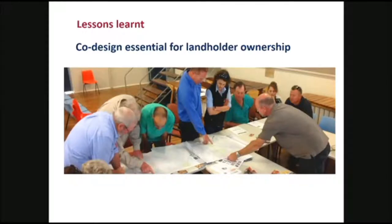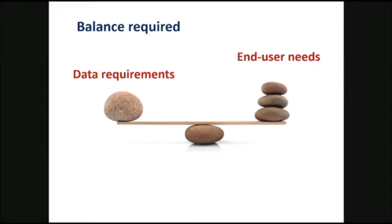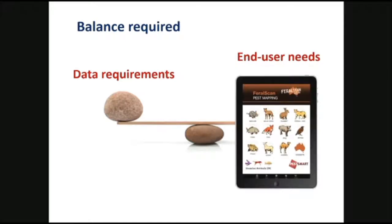Lessons learnt: co-design was really critical for FeralScan and was really critical for community adoption. We need to grow ownership around this resource and around the pest animal problem. I've always struggled with the balance between end user needs and things like data requirements or science requirements, and I've been tending more towards the end user side of things. As an example, people said the FeralScan app should be designed to provide an option to record 28 different variables, but the community is saying they're only really prepared to record two or three. Trying to find that balance and a happy medium between them is the real challenge.